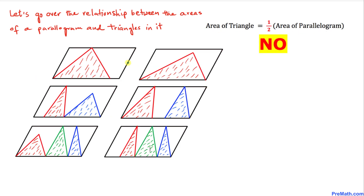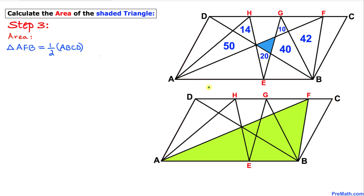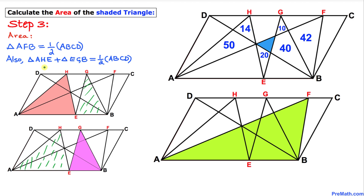Now let me give a few examples where the triangle area is not one-half the parallelogram area. Let's focus on triangle AFB — this shaded triangle has area equal to one-half the area of parallelogram ABCD. This is equation one. Moreover, the area of triangle HAE plus the area of triangle EGB combined also equals one-half the area of parallelogram ABCD. This is equation two.